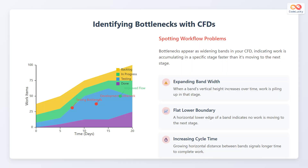Let's learn how to identify bottlenecks using cumulative flow diagrams. Bottlenecks appear as widening bands in your CFD, indicating work is accumulating in a specific stage faster than it's moving to the next stage. When a band's vertical height increases over time, work is piling up in that stage. A horizontal lower edge of a band indicates no work is moving to the next stage. Growing horizontal distance between bands signals longer time to complete work.